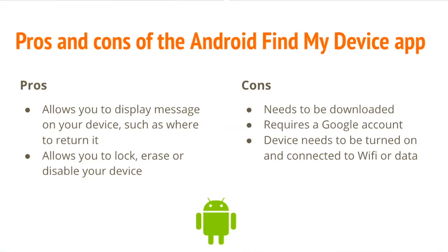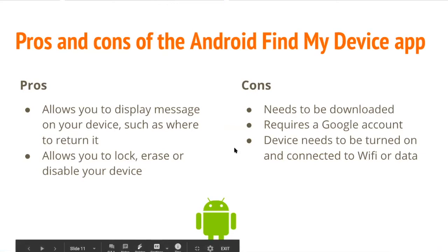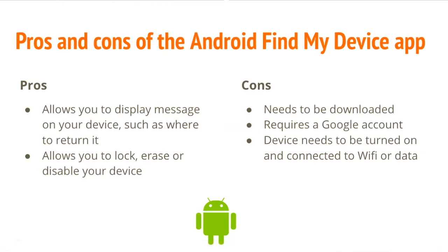Pros and cons of the Android Find My Device app. The pros are that it allows you to display messages on your device, such as where to return it, in the case of it being lost and someone picking it up. It also allows you to lock, erase, or disable your device. The cons are that the app needs to be downloaded — it is not automatically on your phone, as opposed to the Find My app for iPhones. It also requires a Google account, and the device needs to be turned on and connected to Wi-Fi or data in order to locate it.